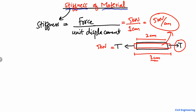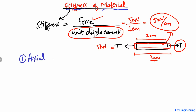A unit displacement produced in a body by the application of a force — this property is known as the stiffness. There are two important types of stiffness: one is the axial stiffness and the second one is the bending stiffness.